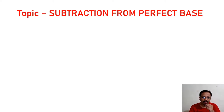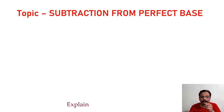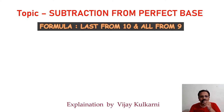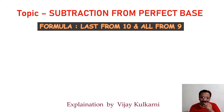Hello friends, welcome to Vedic Math. Today we are going to learn subtraction — specifically, subtraction from a perfect base. A perfect base is a number starting with 1 and followed by zeros. The formula used is: last from 10 and all from 9.